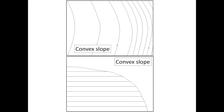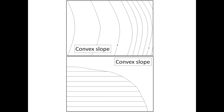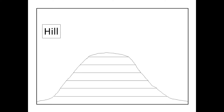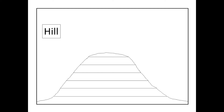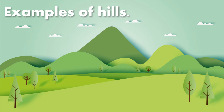Now we're going to look at a hill. A hill is a very simple feature on a contour or topographic map. It looks like circular lines from the top, and from the side — the cross-section view — it looks like a rounded mound. By now you should have a feeling or at least an idea of how to interpret contour maps when you look at them.